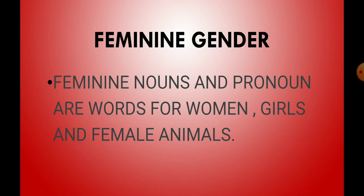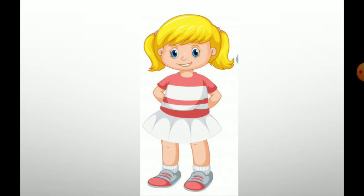The female or girls group is called feminine gender. Feminine nouns and pronouns are words for women, girls and female animals. The noun is the name again and pronoun is the word used instead of the name. The pronoun for feminine gender is she.